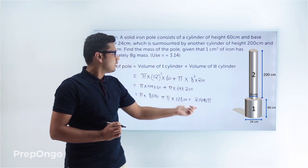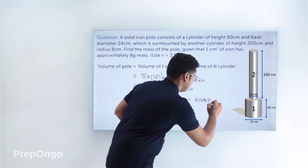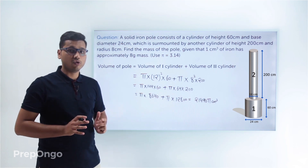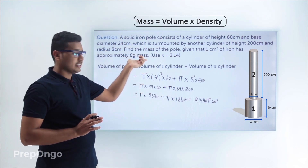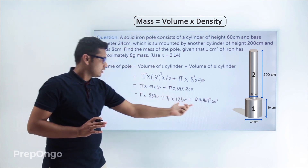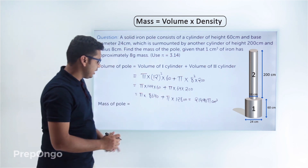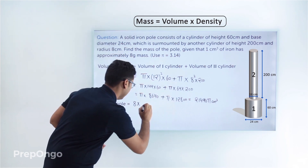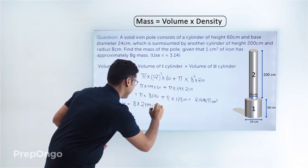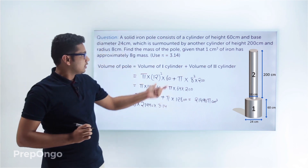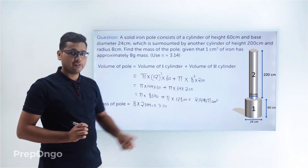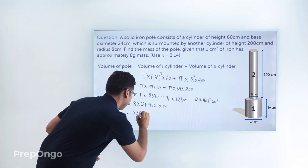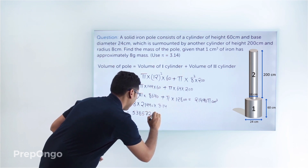This is the net volume of the given iron pole. To find the mass, we multiply by 8 grams per cubic centimeter. So mass = 8 × 21440 × 3.14 (using π ≈ 3.14), which gives 5,385,720.8 grams.